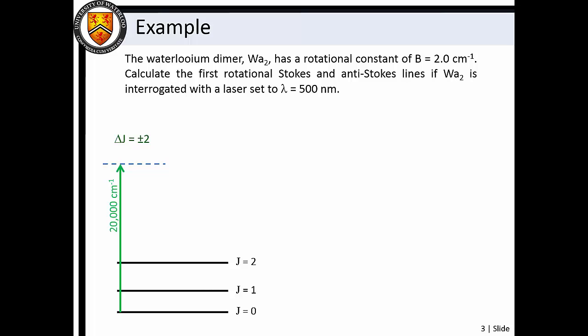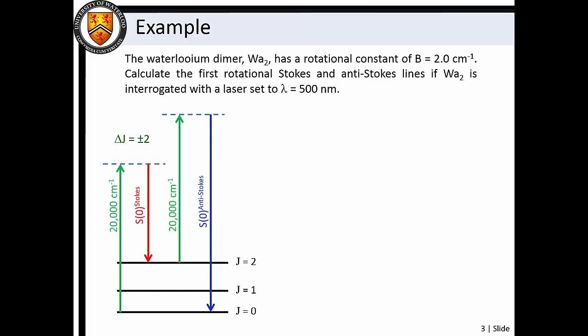Following unit conversion, we see that the incident light has a wavenumber of 20,000 reciprocal centimeters. The first line in the Stokes rotational branch involves an excitation from j equals 0 to j equals 2. The first anti-Stokes rotational line occurs when light scatters off of a molecule in the j equals 2 rotational level, causing de-excitation to j equals 0.